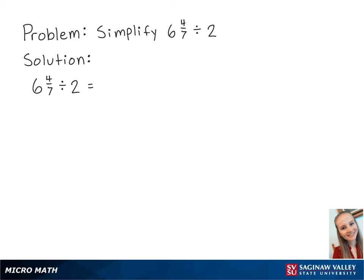First, we need to convert the mixed numbers into fractions. 6 and 4 sevenths is equal to 46 sevenths, and 2 is equal to 2 over 1.